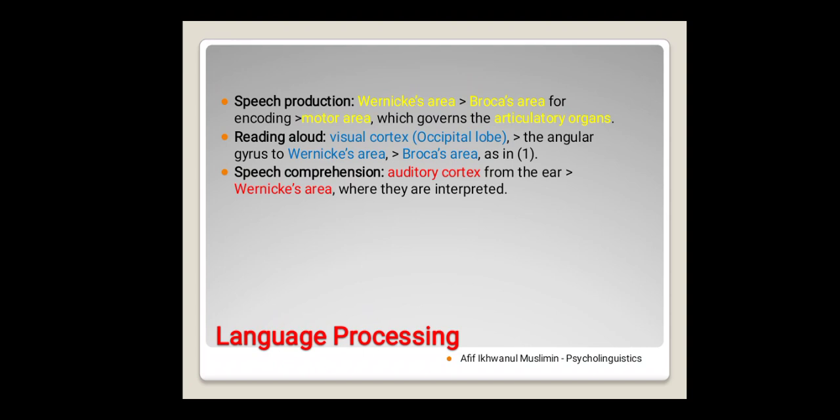And the third process is speech comprehension. Speech comprehension means that we will understand what someone says. It means there is an input which comes to your ear, then it is processed through auditory cortex, then it is sent to Wernicke's area as comprehension, and then later it is interpreted.